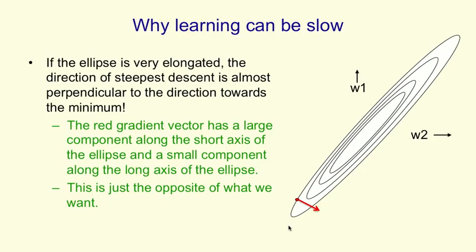So the gradient will quickly take us across the bottom of that ravine corresponding to the narrow axis of the ellipse, and it will take a long time to take us along the ravine corresponding to the long axis of the ellipse. It's just the opposite of what we want. We'd like to get a gradient that was small across the ravine and big along the ravine, but that's not what we get.